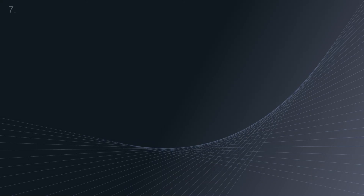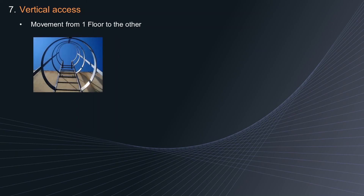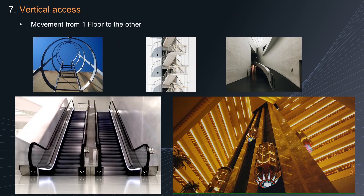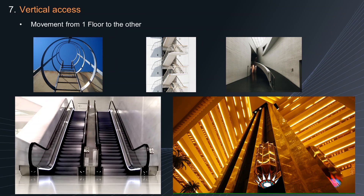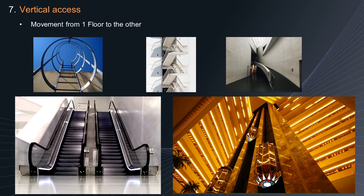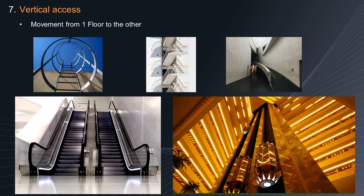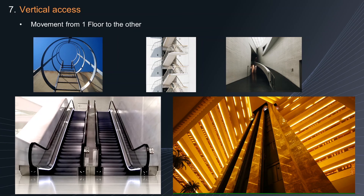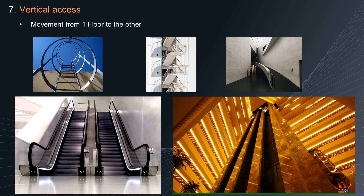Element 7: Vertical access. Vertical access is the movement of people and machines from one floor to another. It is required for buildings with more than one floor. The vertical access mechanism can be a ladder, stair, ramp, escalator, elevator, and so on. When selecting among these options, the type of building — whether residential or commercial — its height, and the cost of the element are analyzed.